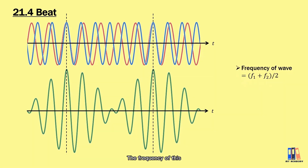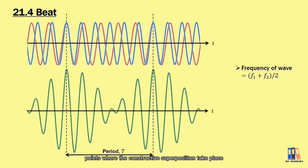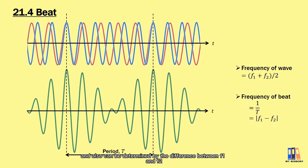The frequency of this output wave is the average frequency of the input waves. We can also measure the period by referring to two consecutive points where constructive superposition takes place. The beat frequency is the reciprocal of the period and can also be determined by the difference between f1 and f2.